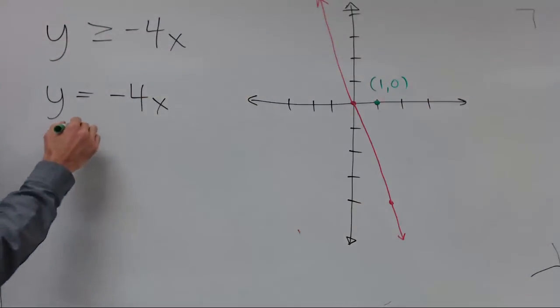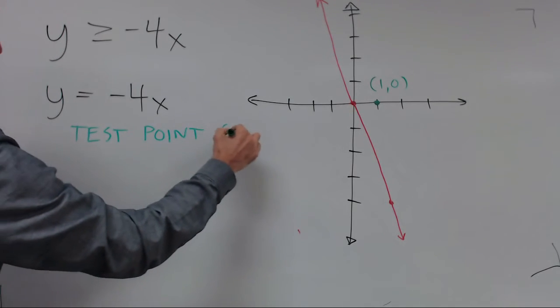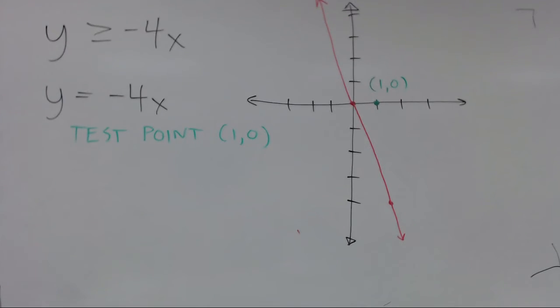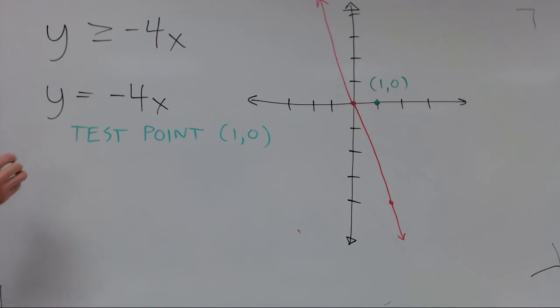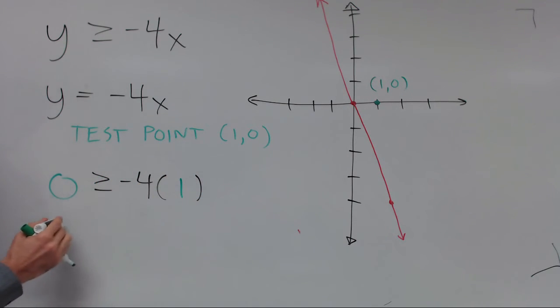So with the test point one, zero, put that in the original inequality. So we'd have zero greater than or equal to negative 4 times one, which is zero greater than or equal to negative 4. Since zero is greater than negative 4, this is a true statement.